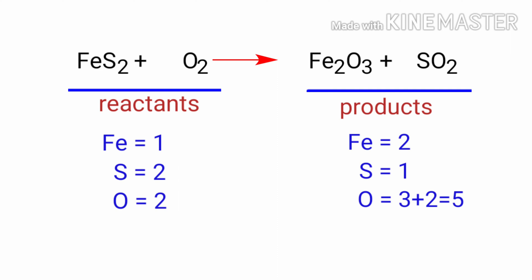On the reactants side, there are 1 Iron atom, 2 Sulphur atoms and 2 Oxygen atoms. On the products side, there are 2 Iron atoms, 1 Sulphur atom and 5 Oxygen atoms. The number of atoms are not balanced on both sides.